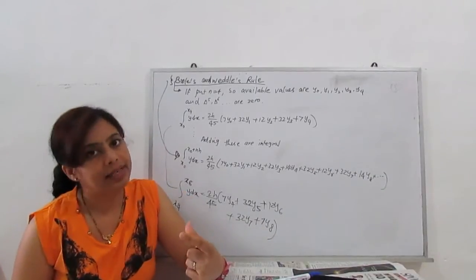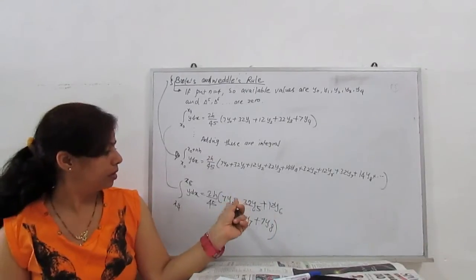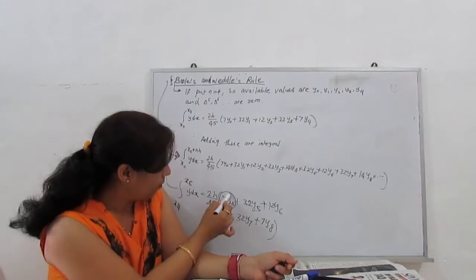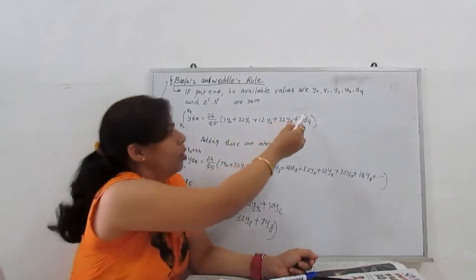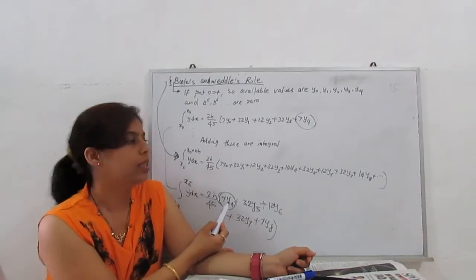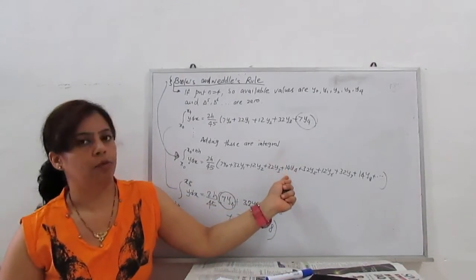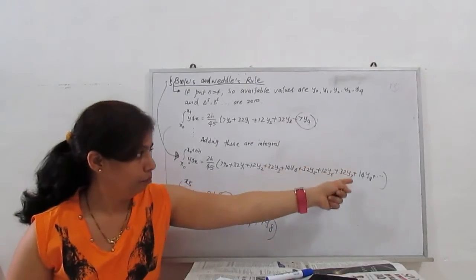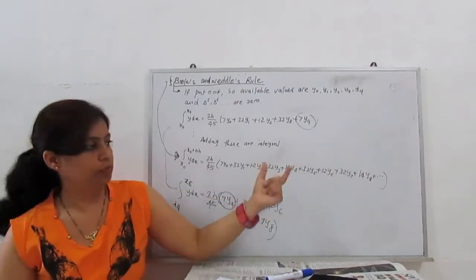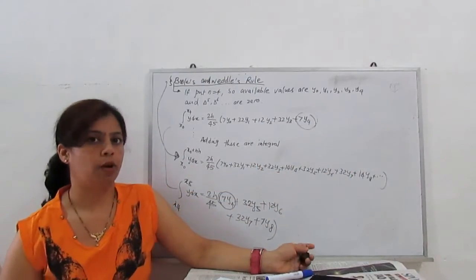So see, the only one term we're repeating: y4 is in this term also, and y4 is here also. So 7 plus 7 is 14. So it will become 14y4. Similarly, the derivative of 4, 8 again 14, and so on. So this formula works like that. This is called Boulez integral formula.